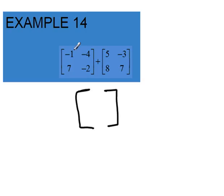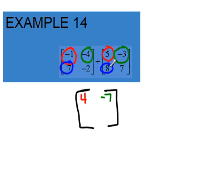The negative 1 corresponds to the 5 and will give us a 4. The negative 4 corresponds to the negative 3 and will give us negative 7. The 7 in the bottom will correspond with the 8 and give us 15. And finally, the negative 2 will correspond with the 7 and give us 5.